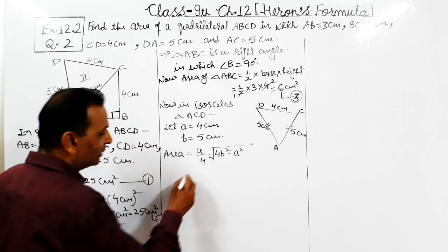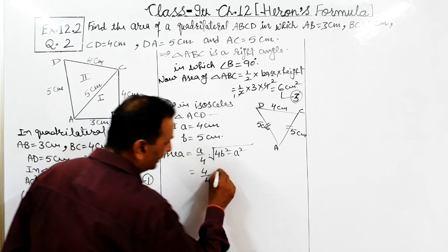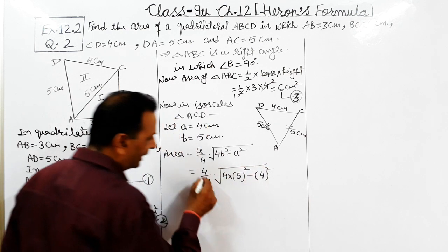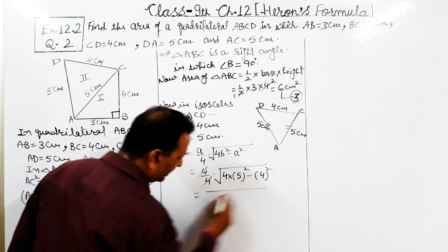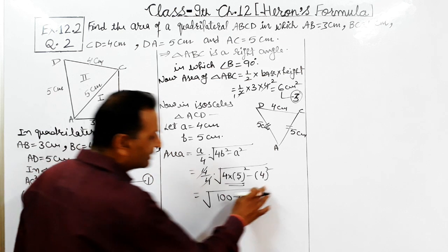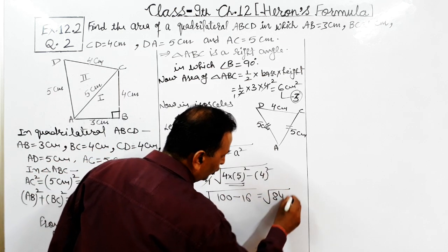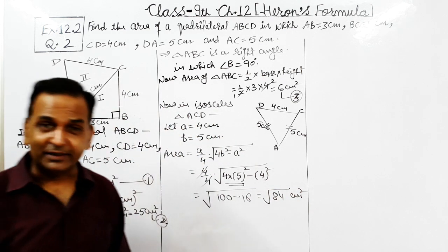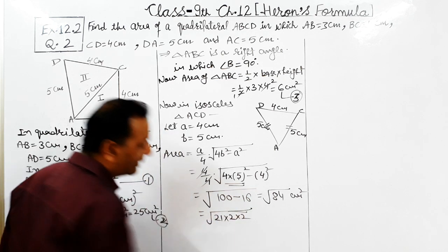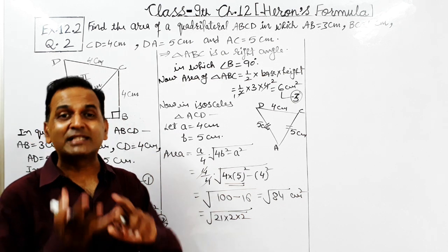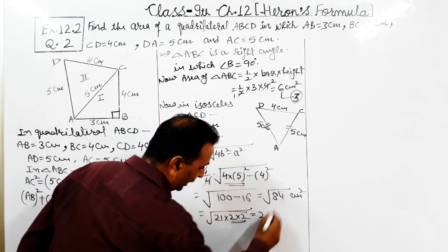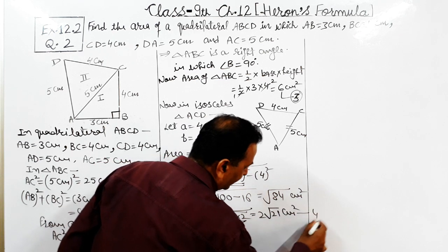Putting in the values: 4 by 4 into under the root of 4 times 5 square minus 4 square. The 4 in numerator and denominator cancel. We get under the root of 4 times 25 minus 16, which is under the root of 100 minus 16, which equals root 84. Factorizing 84: it equals 2 times 2 times 21, where 21 equals 3 times 7. So root 84 becomes 2 root 21 centimeter square — result number 4.